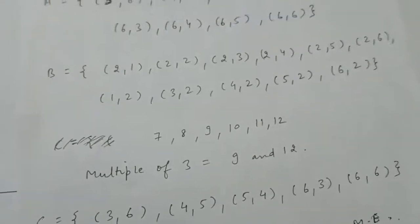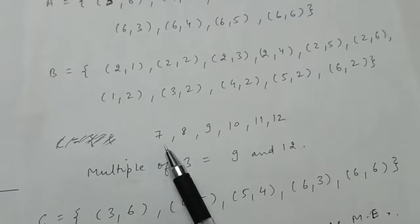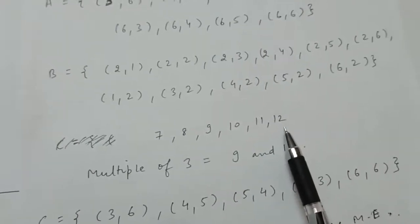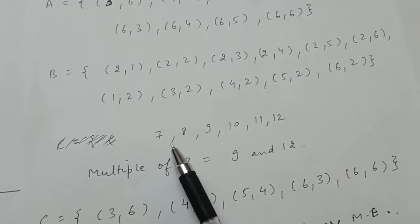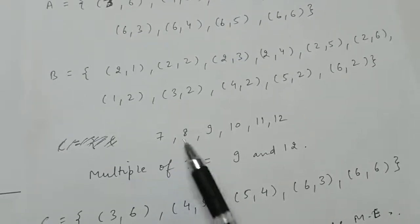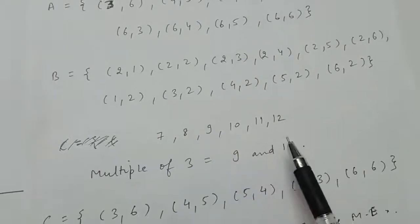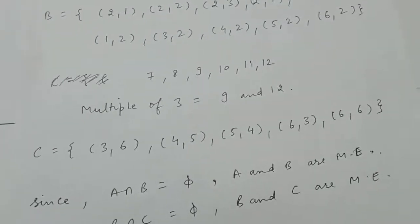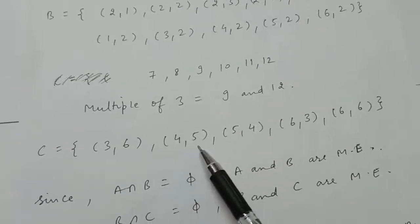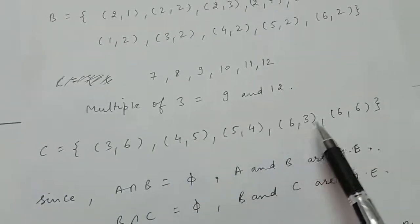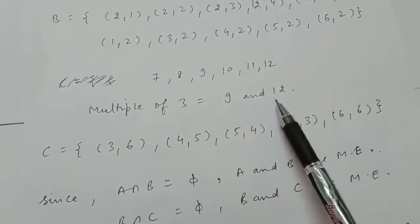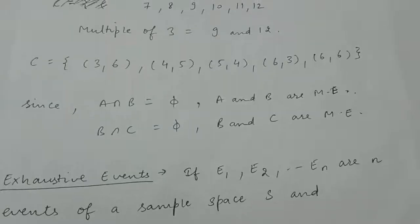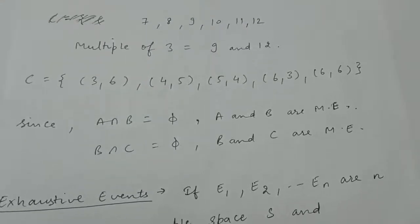Event C is the sum is at least 7 and a multiple of 3. At least 7 means the sum is 7 or greater, up to 12. The multiples of 3 in that range are only 9 and 12. So we find ordered pairs with sum 9 or 12: (3,6), (4,5), (5,4), (6,3), and (6,6) since 6+6=12.